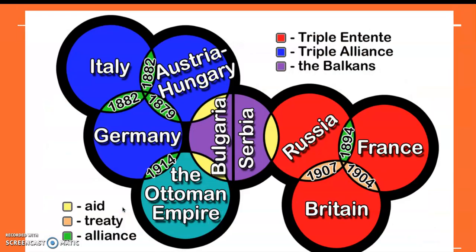Let's jump to one more slide that gives a visual representation of how this played out. On the right you have the Triple Entente — Russia, France, and Britain — with the years of their agreements shown in the Venn diagram centerpieces. For example, Russia and France made an agreement in 1894, and Britain and France in 1904. On the left is the Triple Alliance: Italy, Germany, and Austria-Hungary, with the Ottoman Empire added in 1914. Various treaties, aid agreements, and alliances between nations are shown here — a visual portrayal of the players going into World War I.